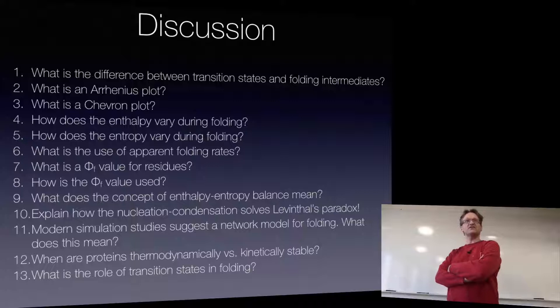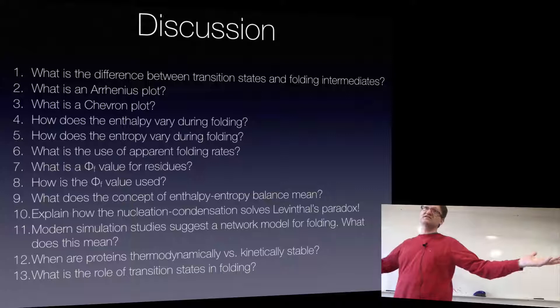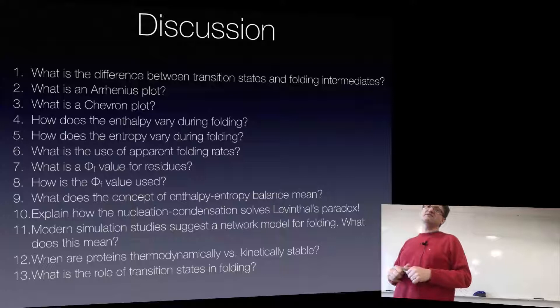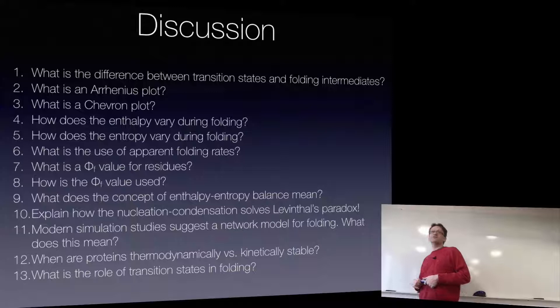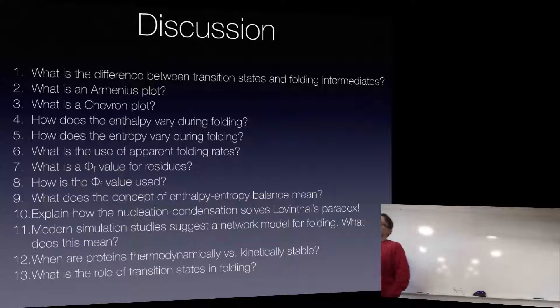Remember the discussions we had: you can calculate anything as the average over all possible states if we could sample all of phase space — every single conformation the system has. In practice there is no way we can do that. However, simulations today are so good that although you can't really sample all of phase space, you can sample the local part you'd sample under equilibrium conditions. Transition states have such high energy that we are not really going to spend any significant time there.